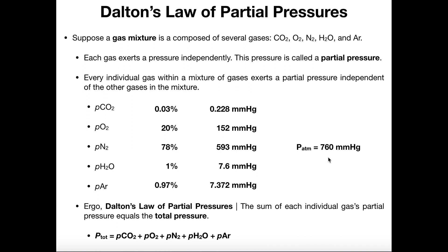That's basically what Dalton's Law of Partial Pressures says: each individual gas exerts a pressure independently of the other gases, just like a one credit hour class provides its own stress independent of your three, four, or seven credit hour class. As we go further into respiratory physiology, we're going to see nomenclature like pCO2 and pO2 a lot. When CO2 gets into the blood, a lot of it is actually there as a gas — similarly, oxygen is dissolved in plasma as a gas, at least some of it. So when we talk about these things, we're actually talking about their partial pressures.